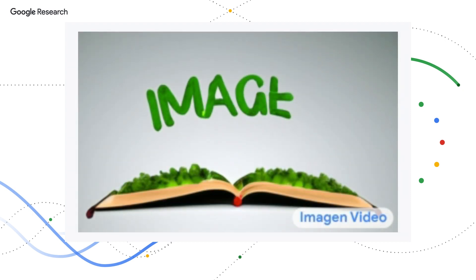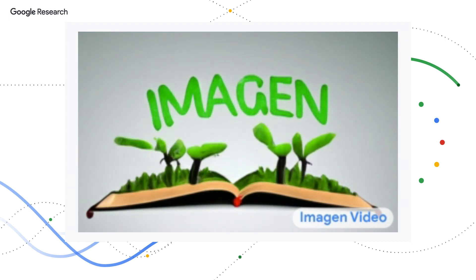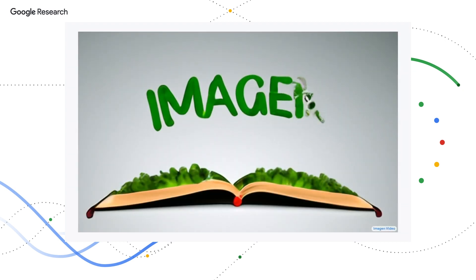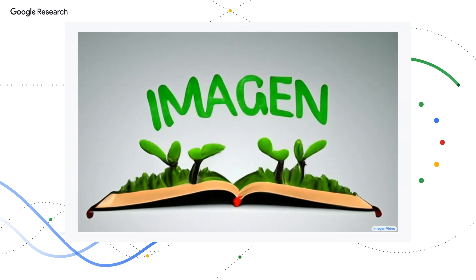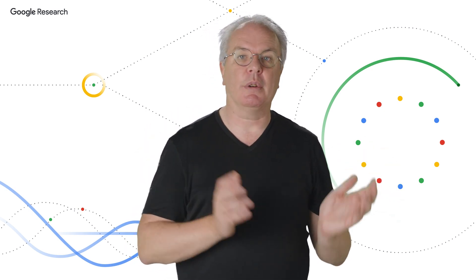Then another TSR doubles the number of frames again, so we now have 128 frames of 320 by 192 video. And then finally, we feed it into another SSR to up the resolution again, so we have 128 frames of 1280 by 768 video. At 24 frames per second, this gives us a little over 5 seconds of video. So Imagen Video is more than just a simple model — it's an orchestration of models that first creates a small amount of video and then continues to upsize it in both spatial dimensions, making it bigger and clearer, and in the time dimension, making it longer and smoother.